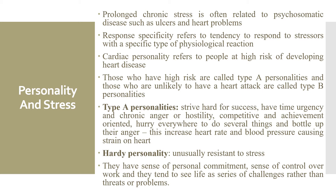In this section, we are going to look at an example of one type of behavior pattern that has been well documented — the so-called cardiac personality, referring to people at high risk of heart disease. Two well-known cardiologists of the USA have developed a classification system of people's risk of heart disease on the basis of their personalities. Those who have a high risk are called Type A personalities and those who are unlikely to have a heart attack are called Type B personalities. Type A individuals strive hard for success in everything they do. Obvious signs of Type A personality are time urgency and chronic anger or hostility. Type A people are very competitive and achievement orientated.